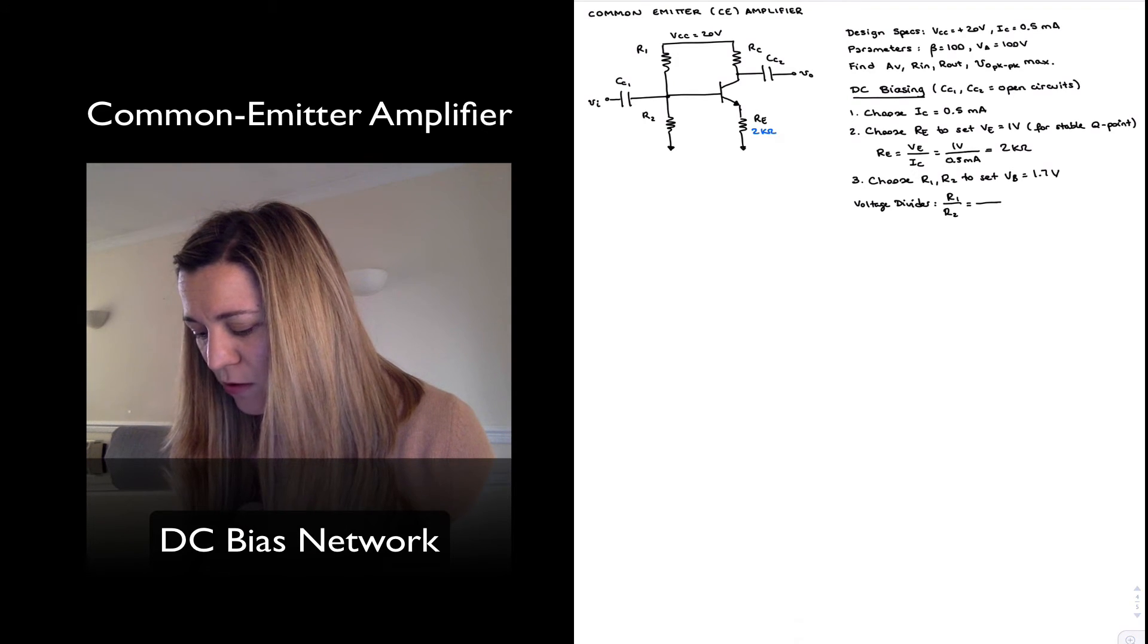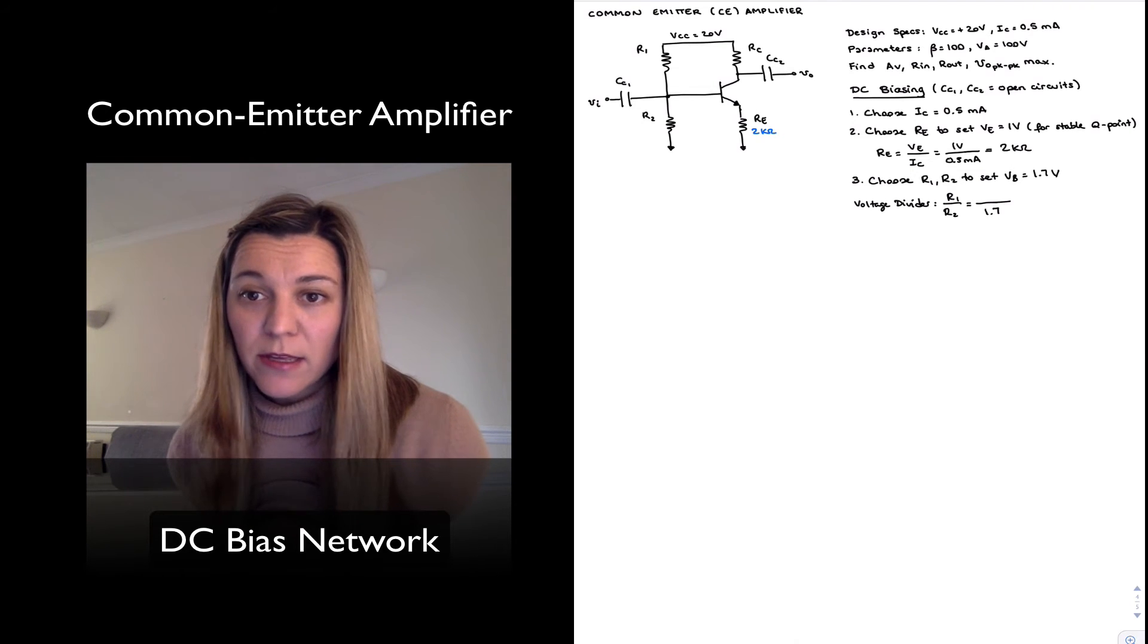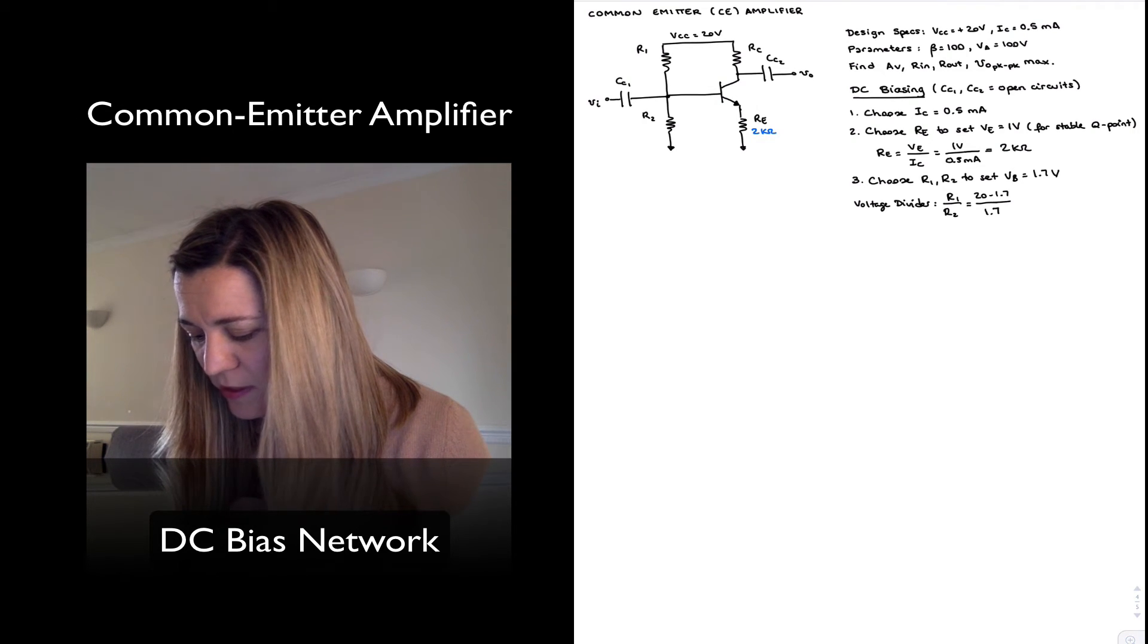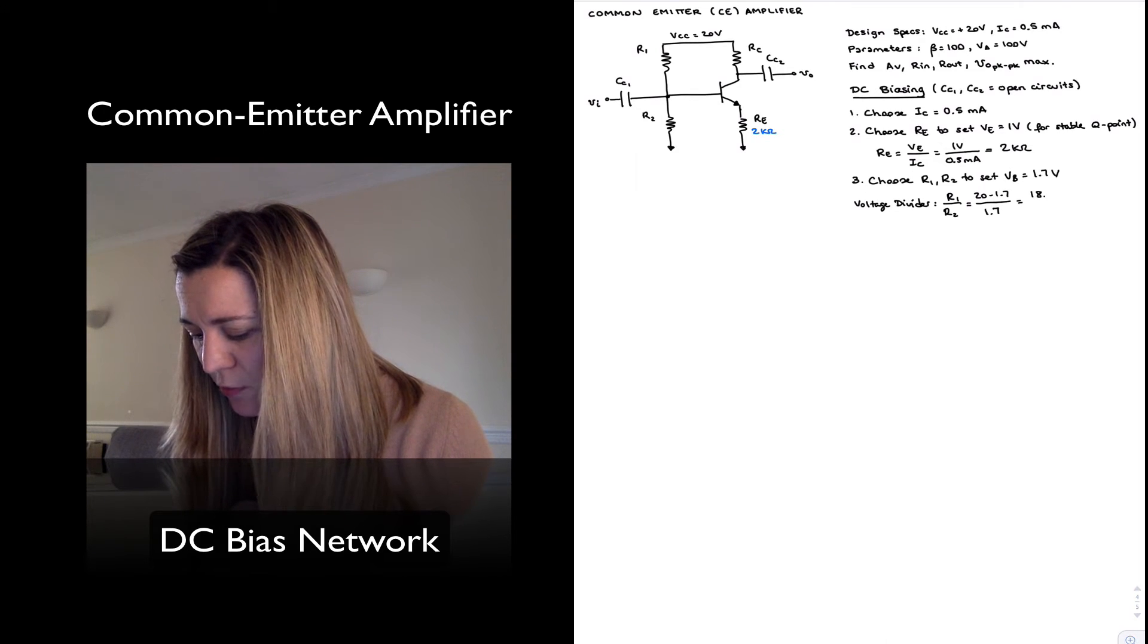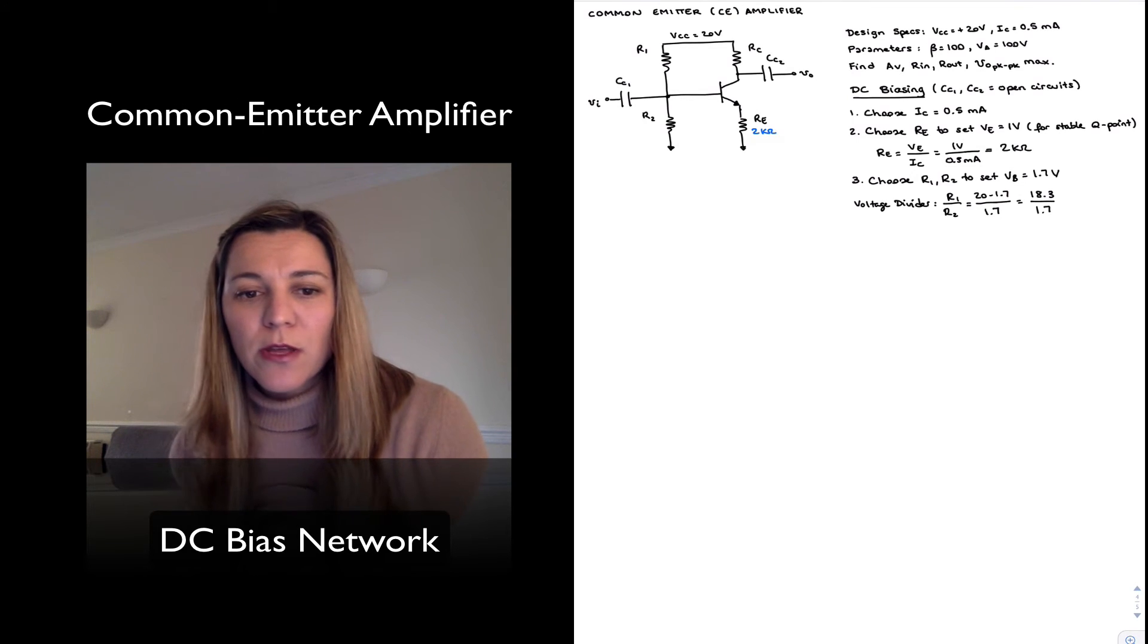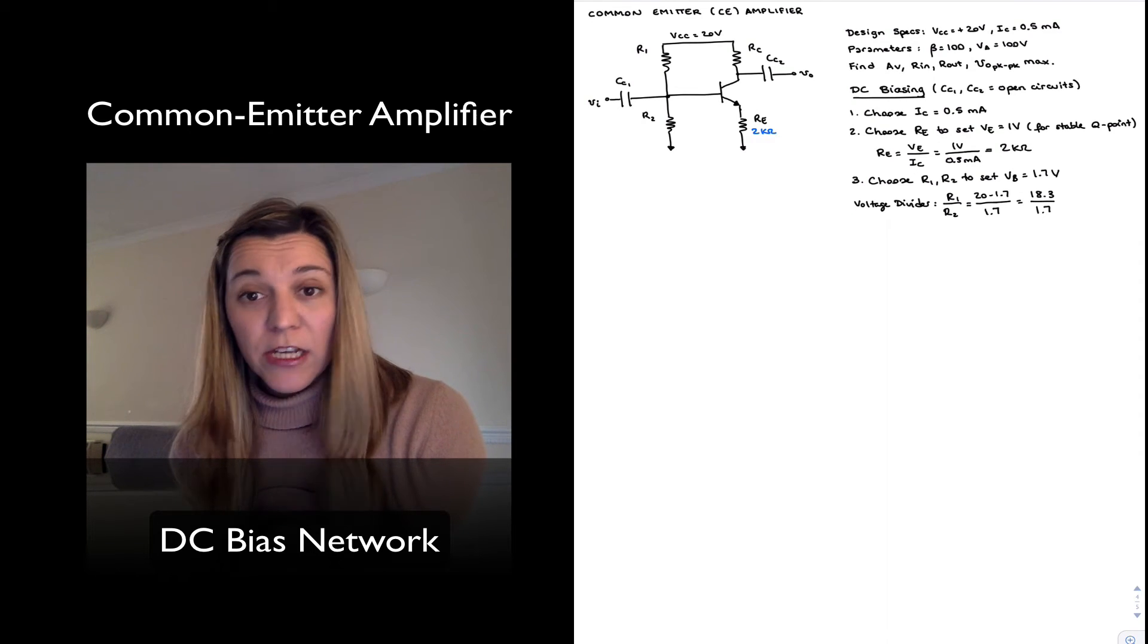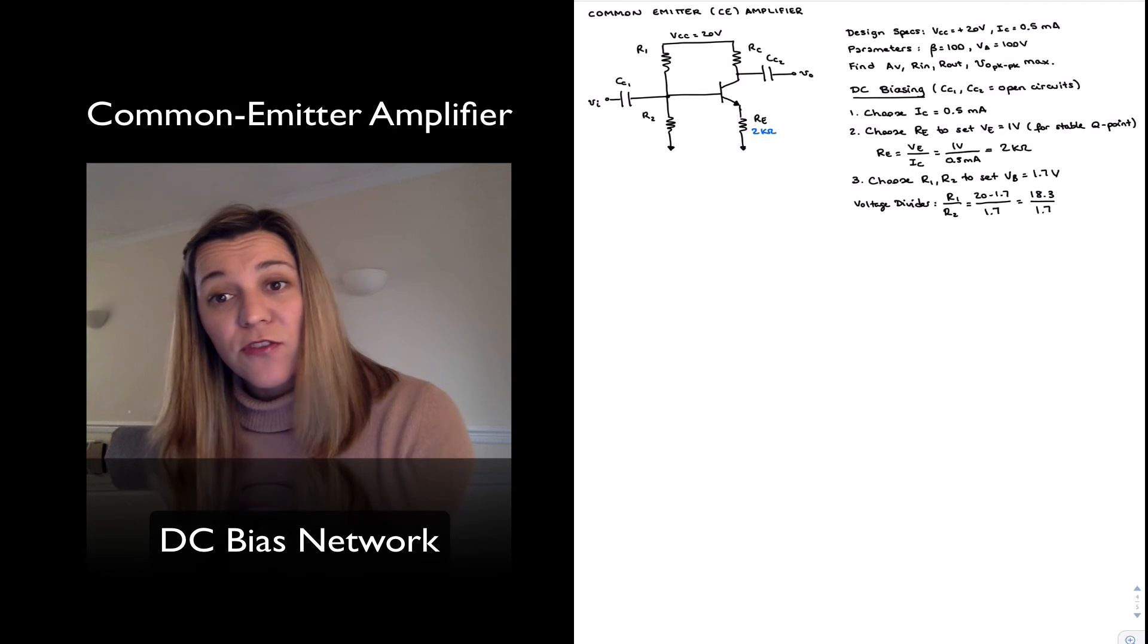We want the voltage across R2 to be 1.7 volts and the voltage across R1 will be the 20 volts of my supply minus the 1.7 volts that falls across R2. So 20 minus 1.7 over 1.7 which is 18.3 over 1.7. So that's the ratio that I want for R1 and R2. We spoke when we were talking about biasing how there is a connection from R2 to the base of the transistor.